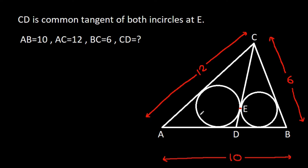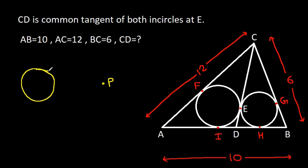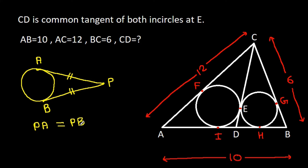Suppose this point is F, this point is G, this point is H, and this point is I. In a circle, from any point P, if we make two tangents on the circle — suppose point A and point B — then PA is equal to PB. So from point A, if AF is 'a', then AI will also be 'a'.